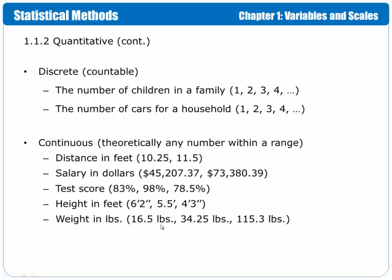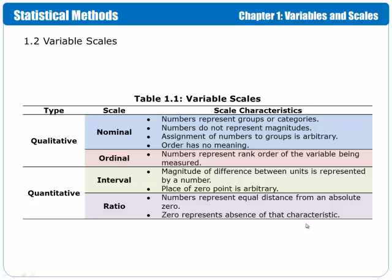Variable scales we have, the types are qualitative and quantitative. The scales are nominal, ordinal, interval, and ratio. So, you'll see that nominal and ordinal fall under qualitative, typically, and interval and ratio fall under quantitative.